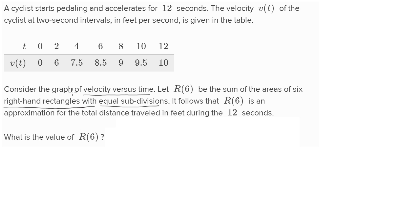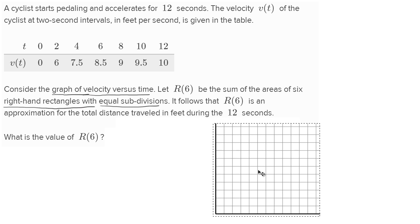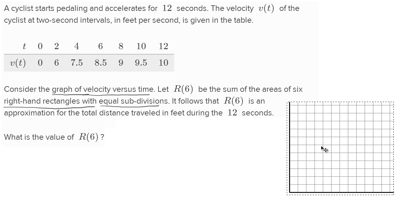They say consider the graph of velocity versus time, so we might as well try to plot that. We've got some graph paper here, and we can focus on the first quadrant because all of our time values and all of our velocity values are positive. This is time; this is the velocity as a function of time axis.